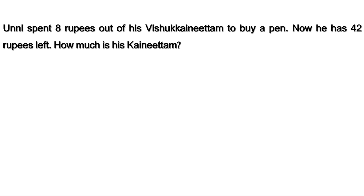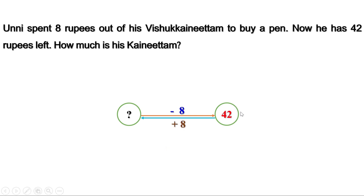Another example: Unni spent 8 rupees out of his Vishu Kainatam to buy a pen. Now he has 42 rupees left. How much is his Kainatam? We don't know how much it is. He spent 8 rupees, so his Kainatam decreased by 8 rupees. Then the amount is 42 rupees. That is, when 8 rupees is subtracted, it is 42. We need the amount without subtracting — so do the reverse: add 8 to 42. We get 50 rupees. That is his Kainatam was 50 rupees. He had 50 rupees and spent 8; the remaining is 42 rupees.